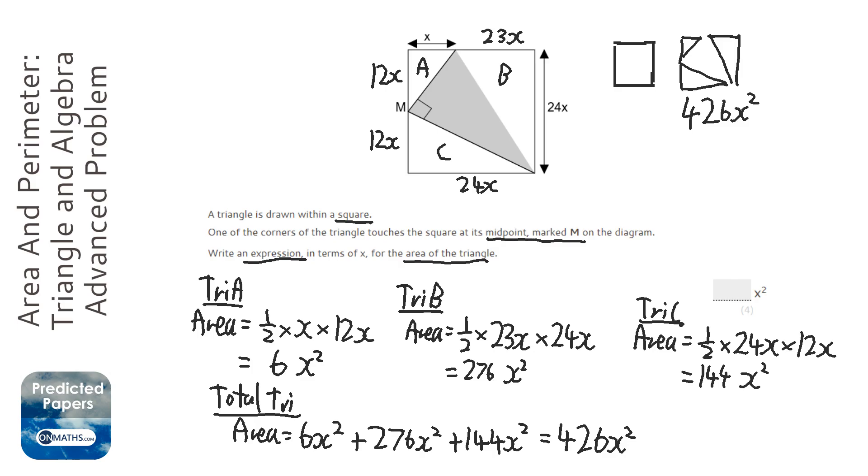Now, the total area is going to be the width of the square times the height of the square. So square area equals 24x times 24x. So the x and the x make x squared, and 24 times 24 is 576.